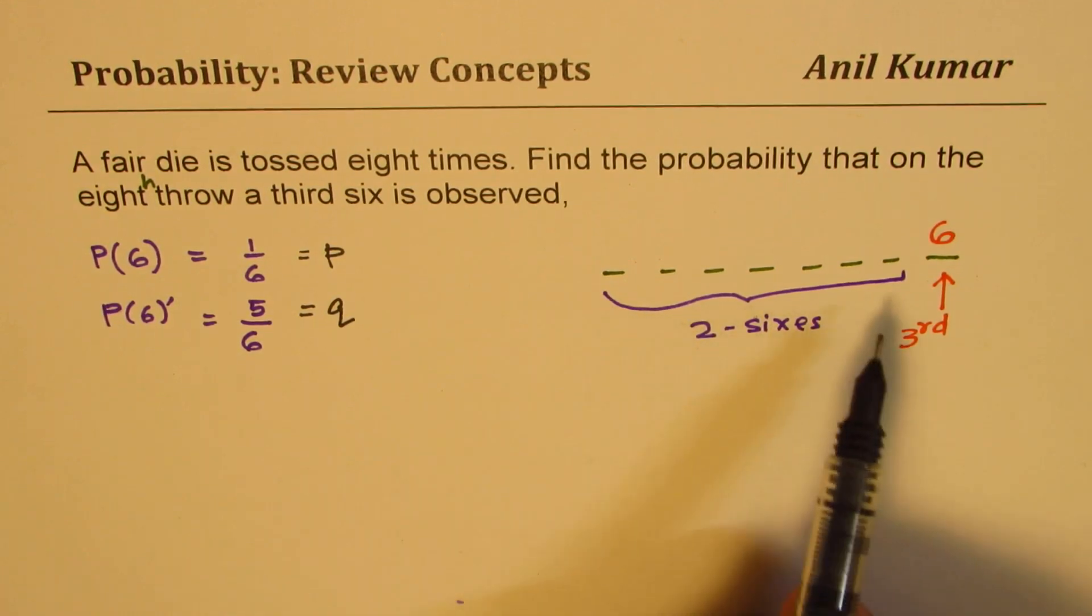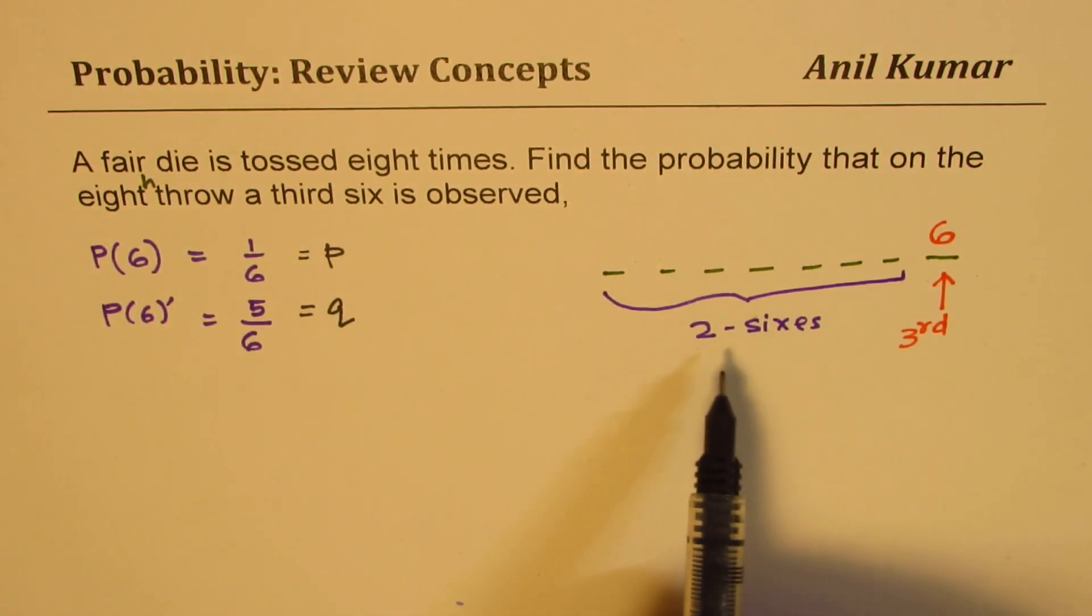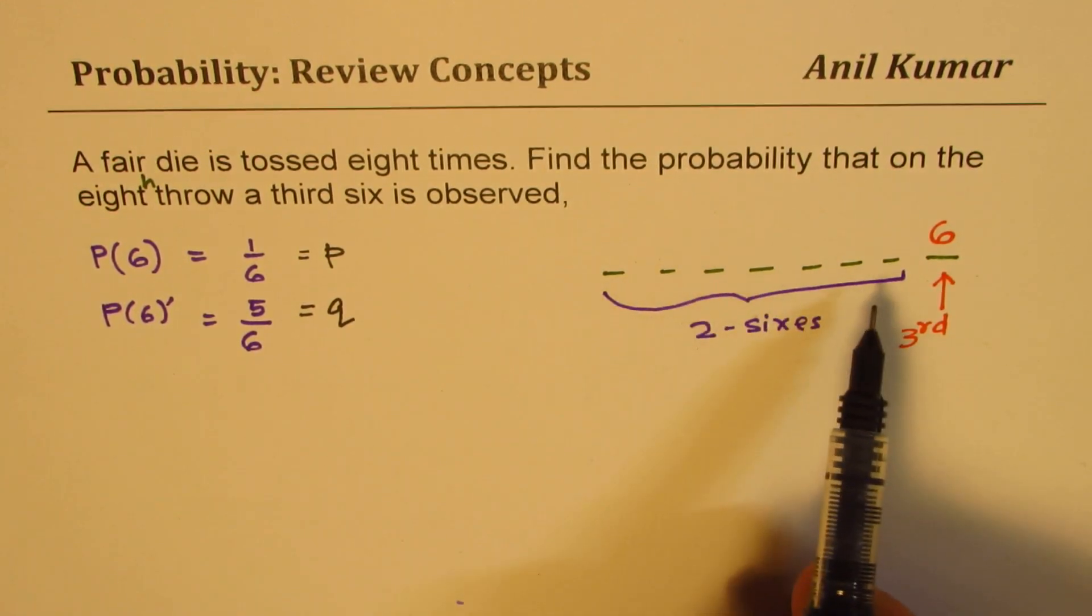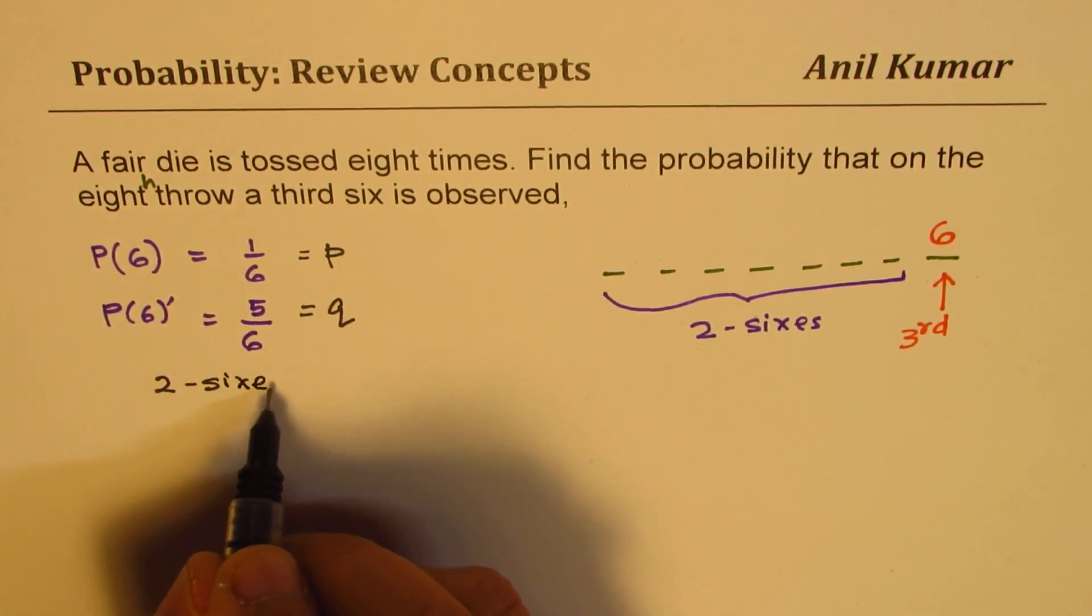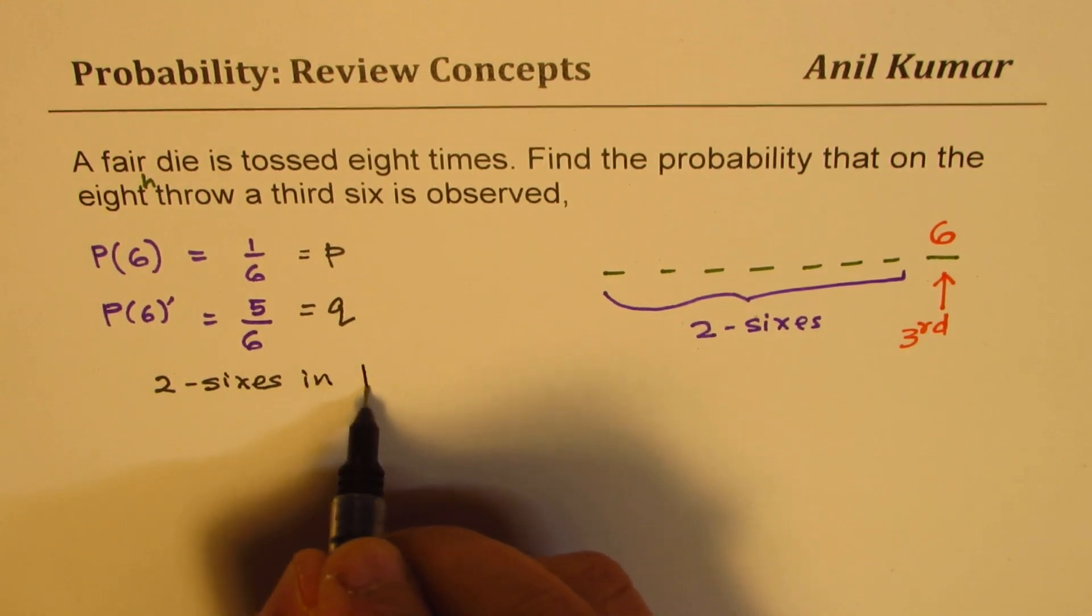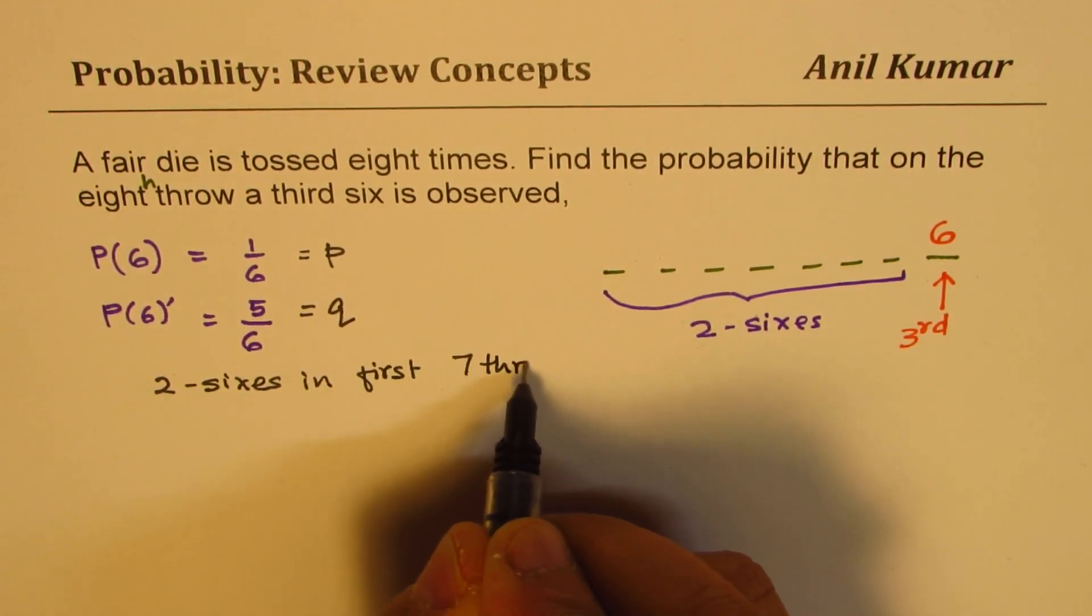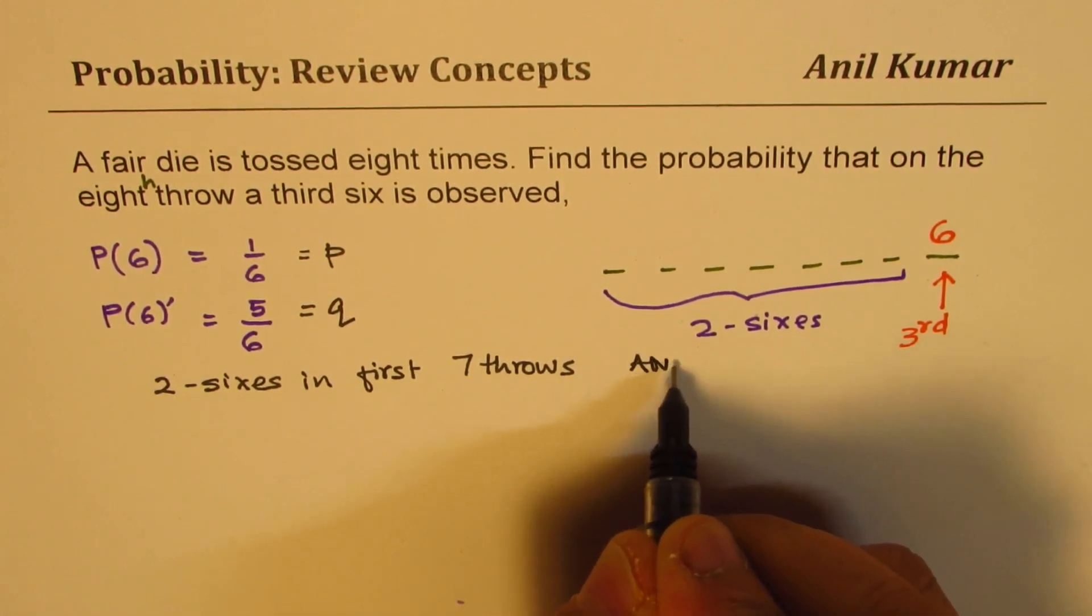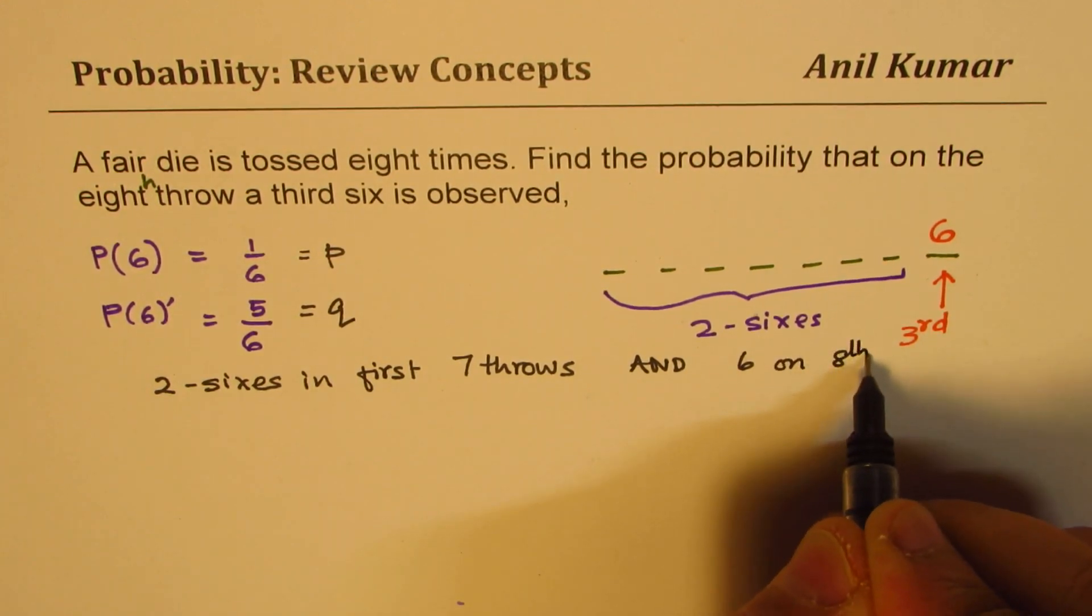Now in the first seven throws, we are really not bothered whether these first two are sixes or any combination. So we want two sixes in first seven throws, right? And six on eighth throw.